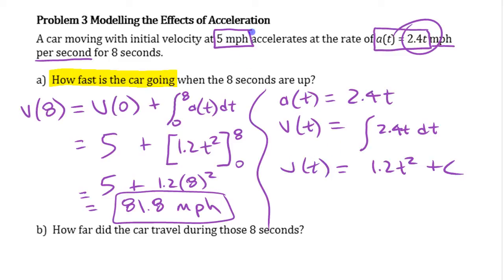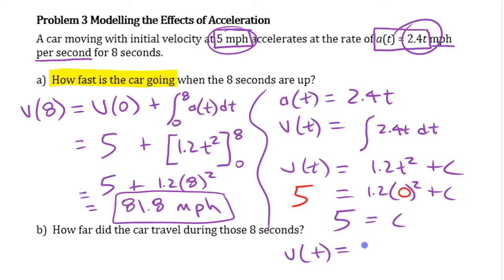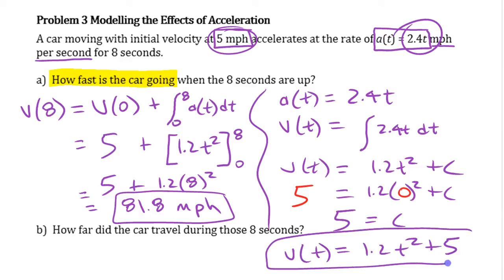Integrating 2.4t gives 1.2t² plus some constant C. We can use our given initial condition: velocity at zero is five. Plugging in, five equals 1.2 times zero squared plus C, so C equals five. Therefore our velocity function is v(t) = 1.2t² + 5.